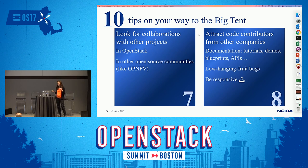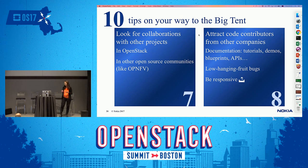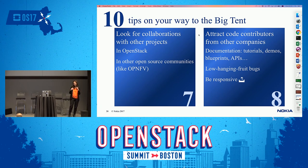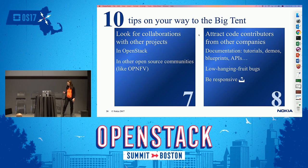You want more code contributors to join your project. You do it through everything already mentioned — sending emails, collaborating, making it easy to join. In OpenStack there is the concept of tagging bugs as 'low hanging fruit.' You can find easy bugs, tag them, and developers searching for those tags will find them and start fixing them. We had developers that found low-hanging-fruit bugs and fixed them. It gives new people an easy opportunity to get to know your project and do an easy fix, and then they might decide to stay and fix more complex bugs.